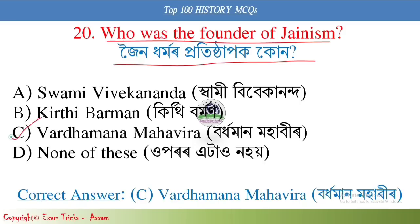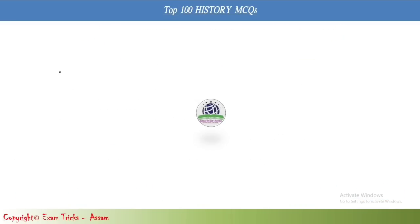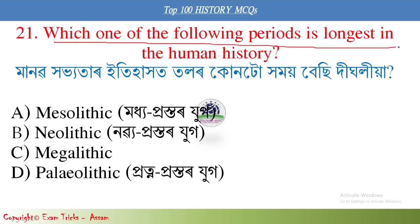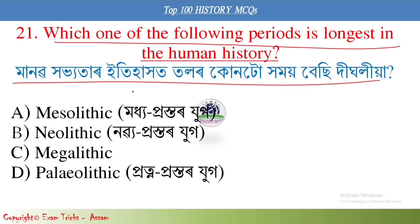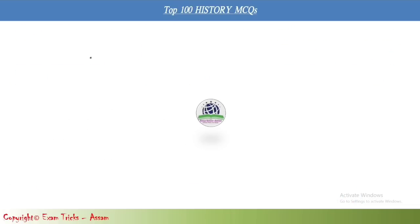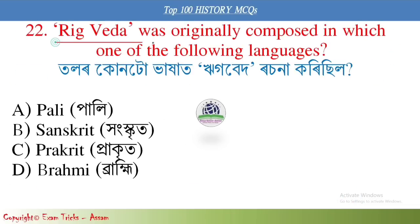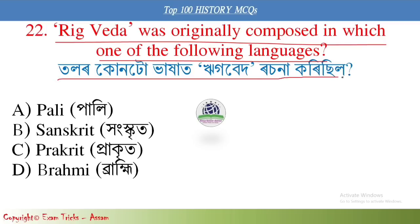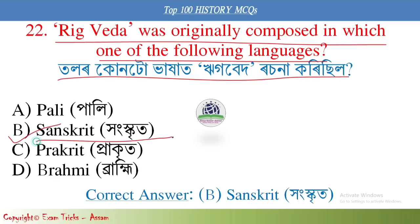Next question: Which of the following pairs is the longest in human history? The correct answer is option B, Sanskrit.